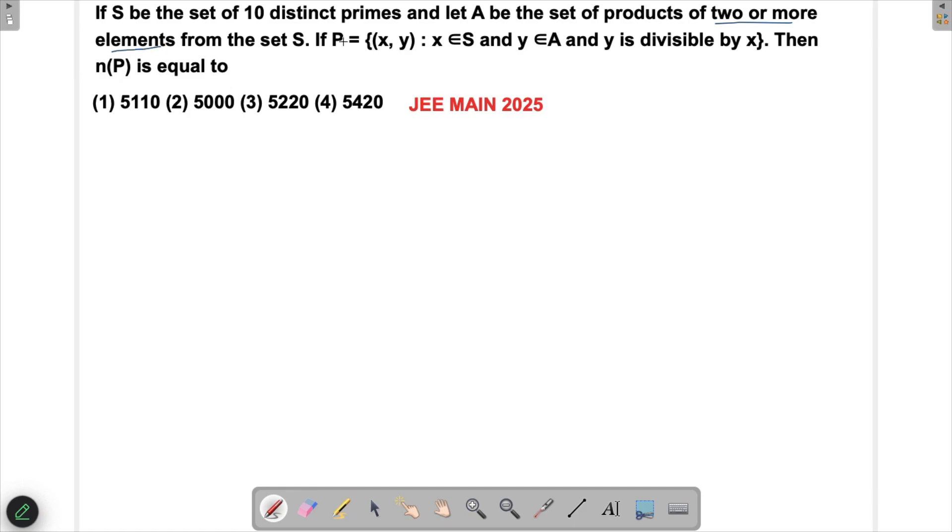And then P is another set which has the ordered pair (x, y) such that x is an element of S, so it is coming from the 10 distinct primes, and y is coming from A, which has products of two or more elements, and y is divisible by x as well. Then we have to find out how many elements are there in P.